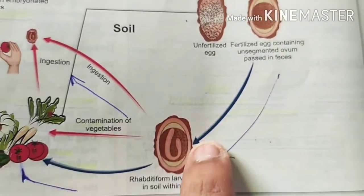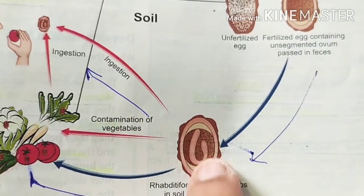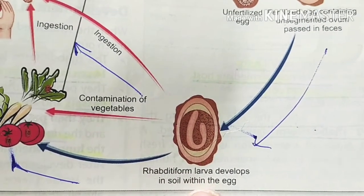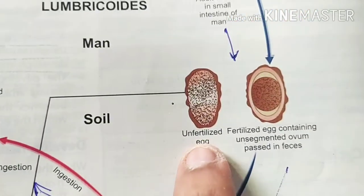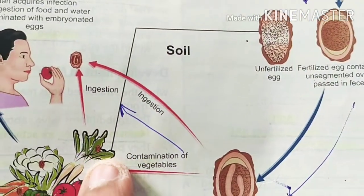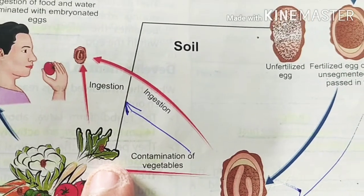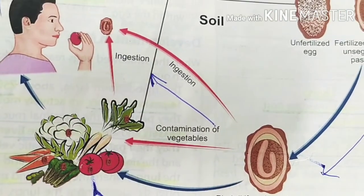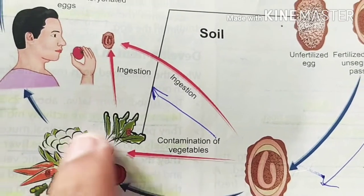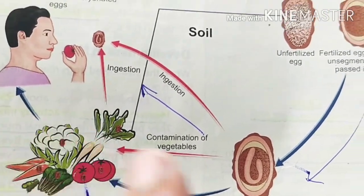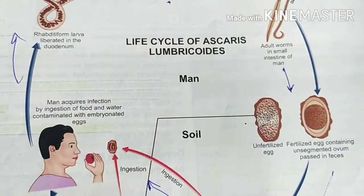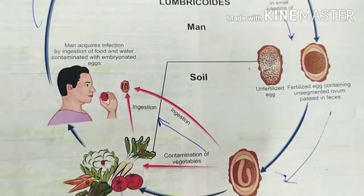The fertilized egg is passed out through the feces. You can see the Rhabditae form larva growing inside the egg. Both the fertilized and unfertilized eggs go back into the soil and contaminate food, water, and fruits, and in this way the cycle of Ascaris lumbricoides continues.